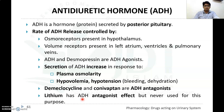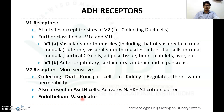ADH acts through vasopressin receptors, of which there are two types: V1 and V2. V1 receptors are found at all sites except where V2 is found, and are classified into V1A and V1B. V1A receptors are found in vascular smooth muscles including vasa recta in the renal medulla, uterus, and visceral smooth muscles.